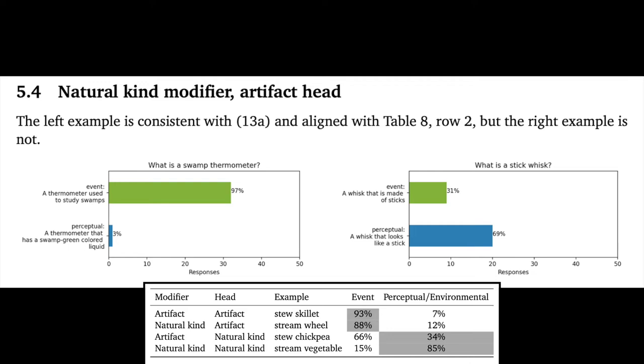For natural kind modifier, artifact head, the pattern is more mixed. The left example for swamp thermometer is nicely aligned with what Levine et al. predicted and what they saw. However, stick whisk is certainly more mixed, and here perceptual readings dominate. I'm actually not sure what's happening here or how malleable this result is.